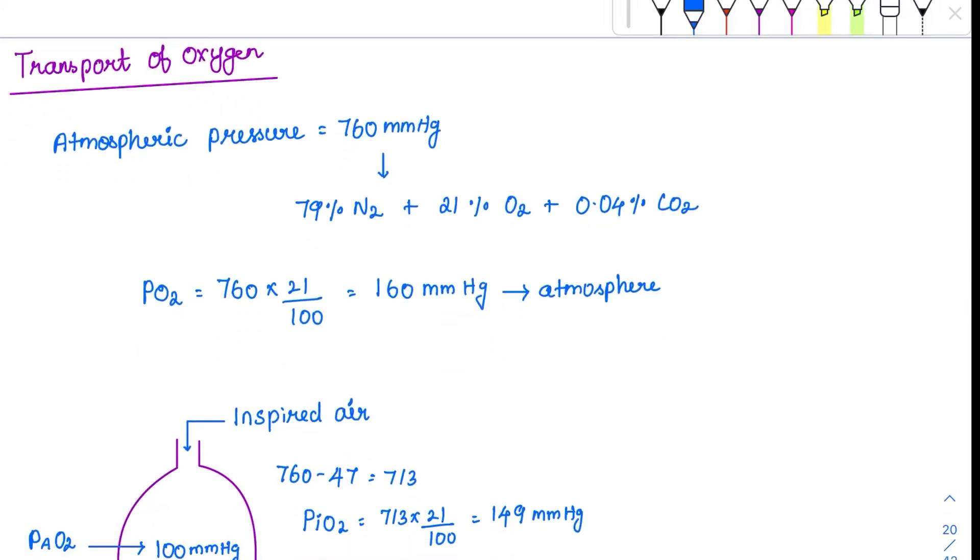Now coming to the most important topic, that is transport of oxygen. More than the transport of oxygen, the oxygen-hemoglobin dissociation curve which is associated with this is very important. Now let's talk about the transport of oxygen. How oxygen is transported from the atmosphere to the tissue, what is the partial pressure in various places, and how much amount is delivered to the tissue.